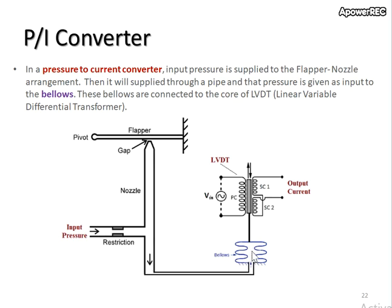The movement of expansion and retraction will be detected by this set of LVDT. LVDT is a Linear Variable Differential Transformer, which converts the movement of up and down into output current.